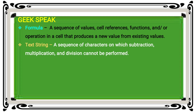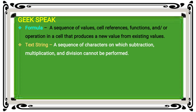A text string is a collection of characters — A, B, C, D are single characters. If you combine characters, that is called a text string. The text string cannot perform subtraction, multiplication, or division operations. But the addition operation will be done.